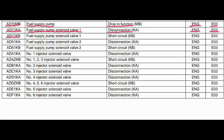Code AD11KB. Where is the problem? Fuel supply pump solenoid valve 1. What is the problem? Short circuit. Engine control is related to this fault, and the action code is E03.